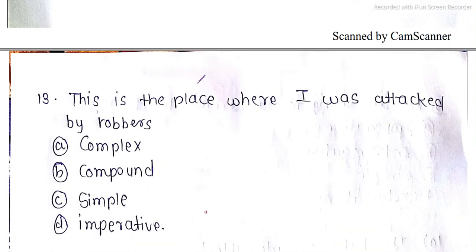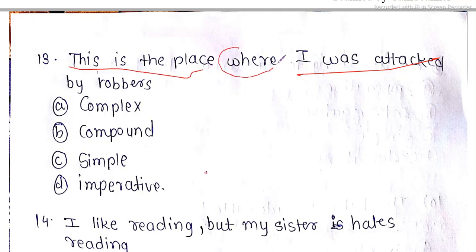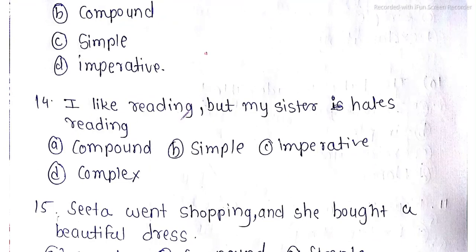Question 13: 'This is the place where I was attacked by Robert.' — 'where' connects the dependent and independent clause, so this is a complex sentence. Question 14: 'I like reading but my sister hates reading.' — 'but' is used as a conjunction joining two simple sentences, so this is a compound sentence.